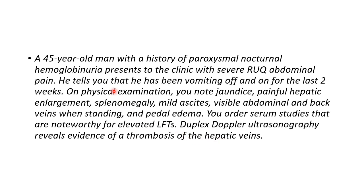In this case, the patient is an adult with paroxysmal nocturnal hemoglobinuria, which is a risk factor for Budd-Chiari syndrome. He also has features of Budd-Chiari syndrome: tender hepatomegaly, jaundice, splenomegaly, mild ascites, visible abdominal and back veins when standing, and edema. Lab findings show elevated liver function tests and duplex Doppler ultrasound shows evidence of thrombosis of the hepatic veins — all characteristic features of Budd-Chiari syndrome.